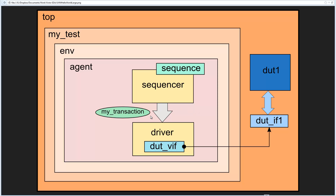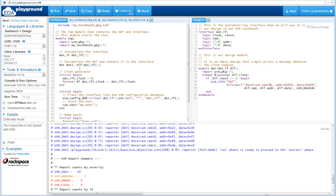This week we will go over a simple UVM hello world example. As you can tell from this block diagram, it's not quite as simple as a hello world example in other languages. There are a few other components, so it is simple yet complicated enough to serve as a base for an actual UVM test bench. First, let's go over how to run this code.